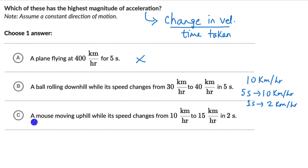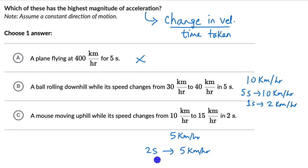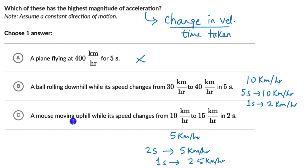The third option says a mouse moving uphill with its speed changing from 10 to 15 kilometers per hour in two seconds. The change in speed is 5 kilometers per hour, happening in two seconds. So in one second the change is 2.5 kilometers per hour — acceleration is 2.5 km/h per second. We can see that the magnitude of acceleration is highest for option C.